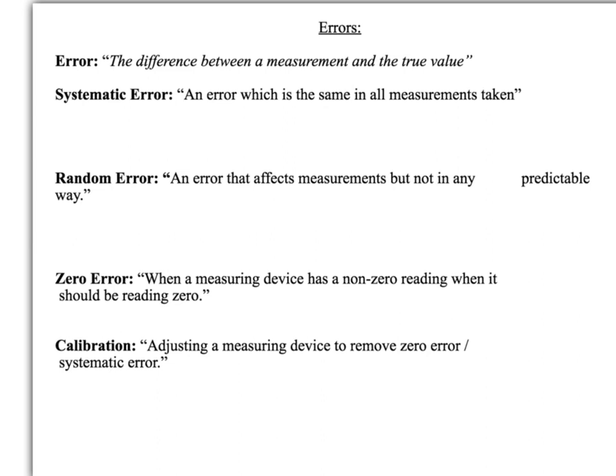First of all, what is an error? An error is the difference between a measurement and the true value. So if we've got a battery and we should be measuring a potential difference of 5 volts across it but our measuring device measures 5.2 for whatever reason, the error there would be 0.2 volts. It's the difference between what's measured by the measuring device and the actual value it should be reading.